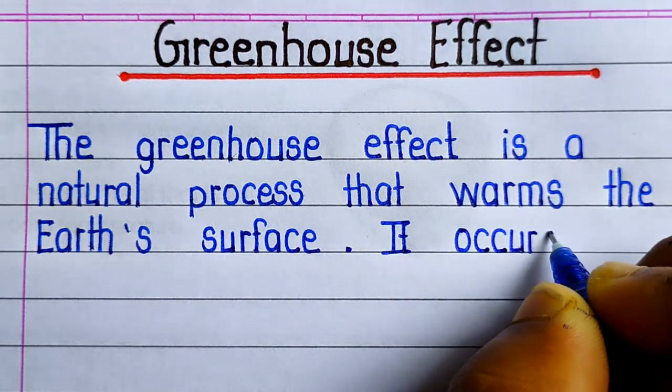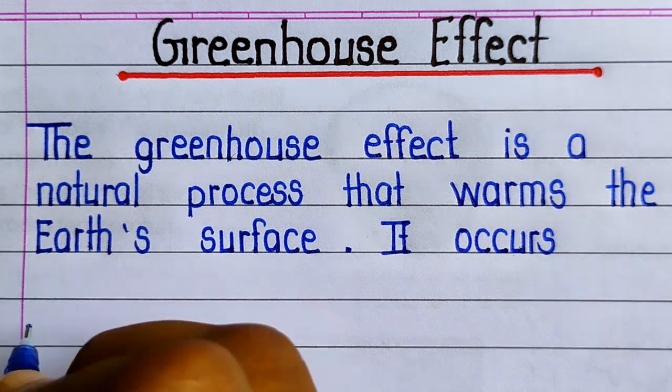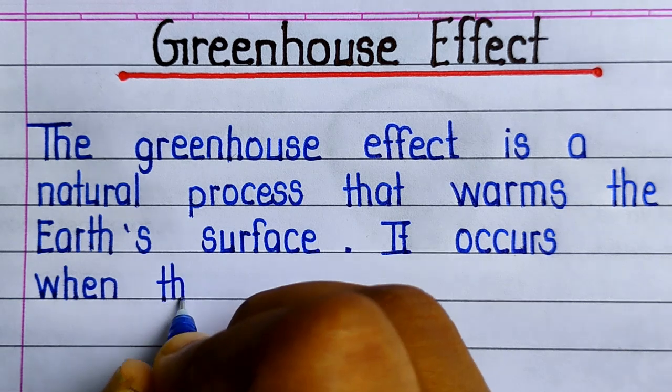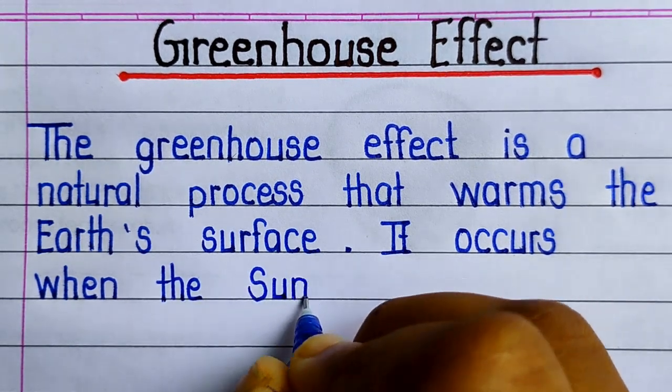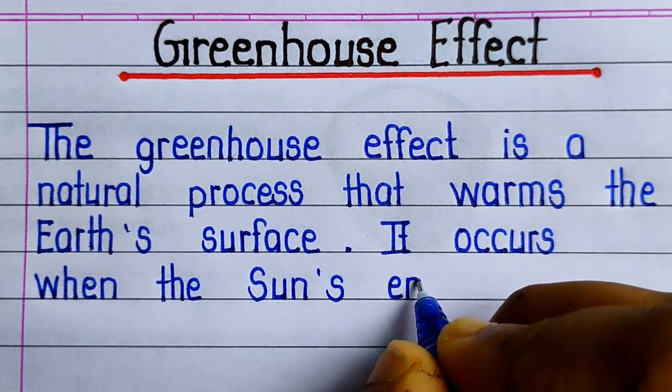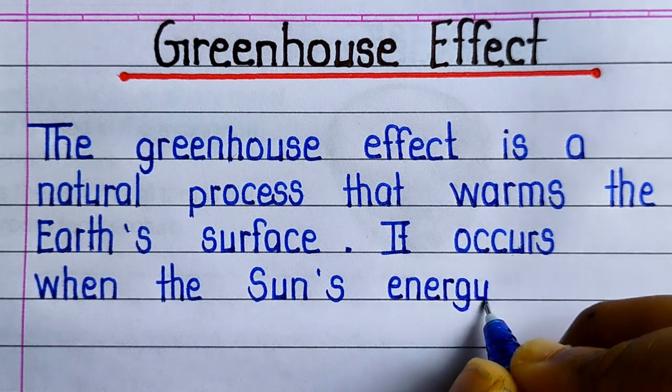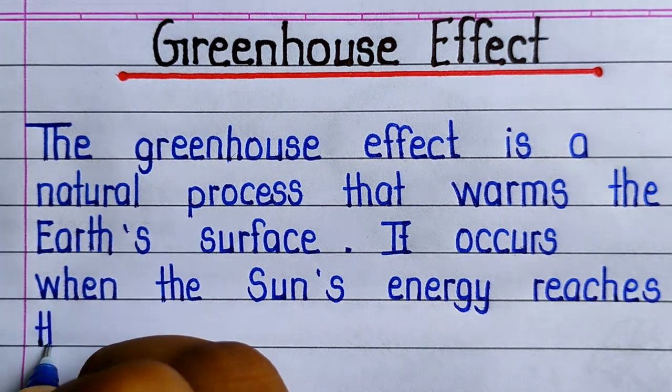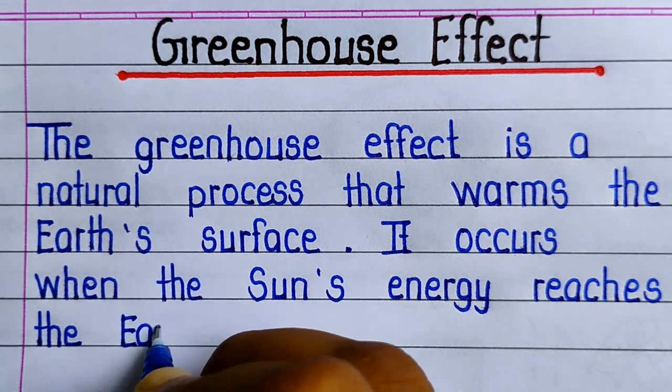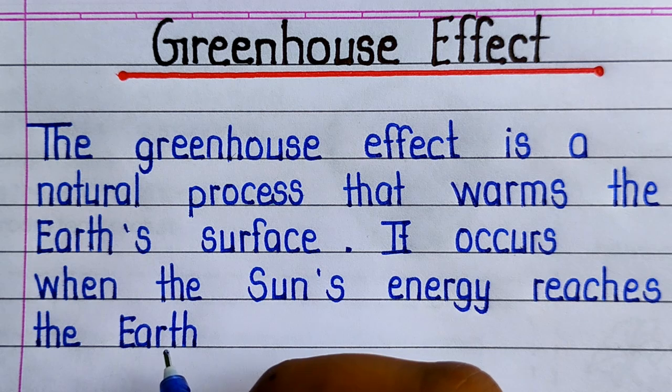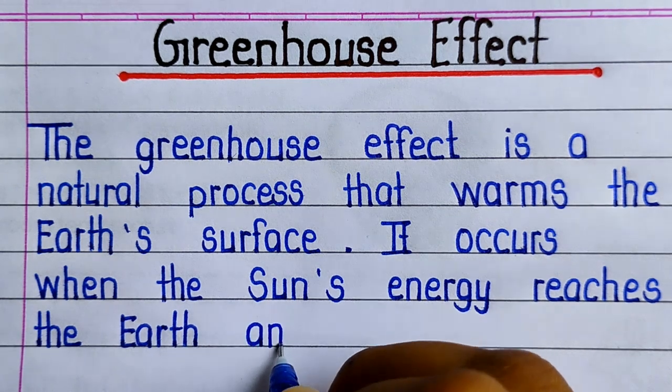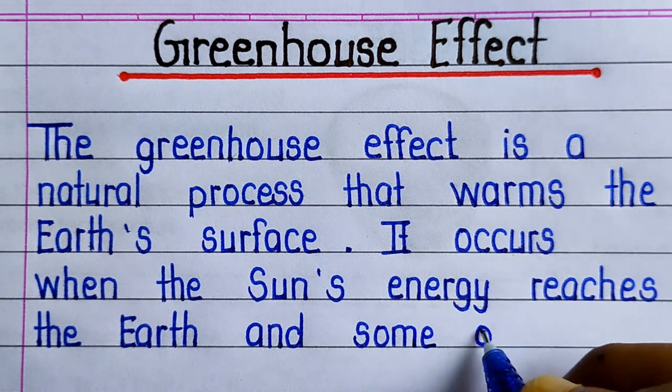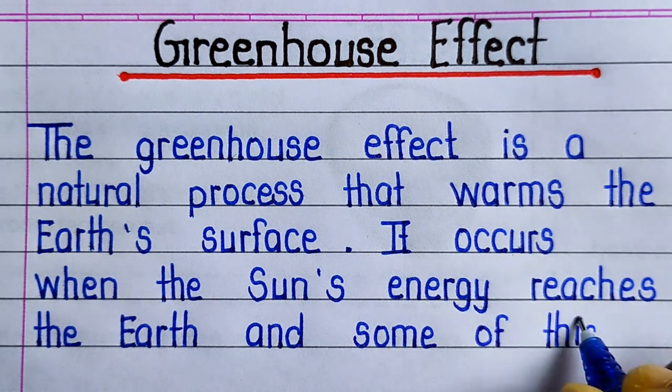Let's start. The greenhouse effect is a natural process that warms the Earth's surface. It occurs when the Sun's energy reaches the Earth and some of this energy is reflected back to space.